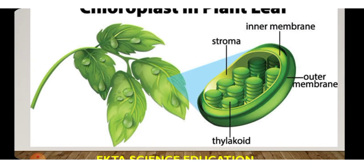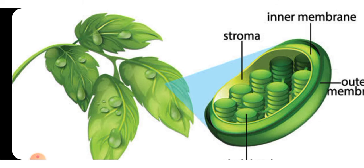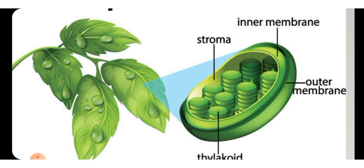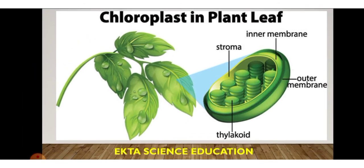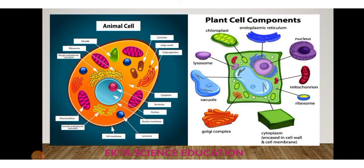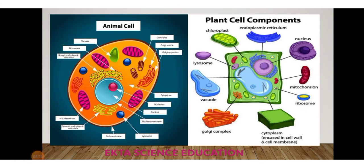In this image you can see the chloroplast in the plant leaf. Under the microscope, you can see the stomata — the pore-like openings on the plant. Plants are green because of the chloroplast pigment. The chloroplast has an inner membrane, outer membrane, thylakoid, and stroma. Plant cells contain chloroplasts while animal cells do not, which is why plants can prepare their own food.